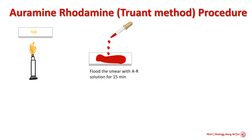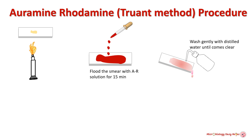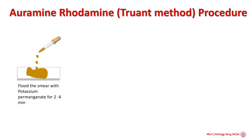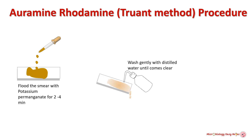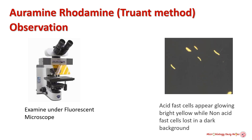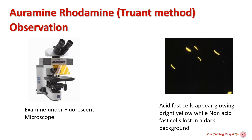Flood the slide with the Auramine-Rhodamine solution for 15 minutes — do not let the surface dry. Wash the slide with a gentle stream of distilled water until no color appears in the effluent. Flood the smear with the decolorizing agent for two to three minutes, then wash with distilled water and air dry the slide. Flood the smear with permanganate counter stain for two to four minutes, wash gently with distilled water, and blot dry the slide. Examine with a fluorescence microscope — acid fast bacteria appear as brightly fluorescent yellow-orange cells against a dark field, while non-acid fast cells are not visualized as they did not take up the fluorescent dye.